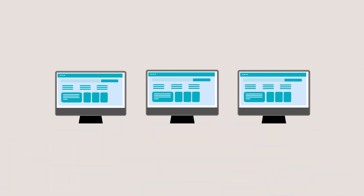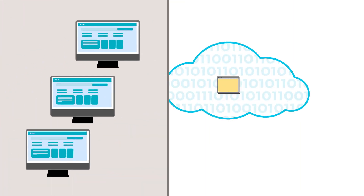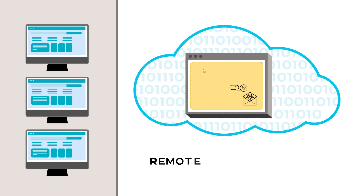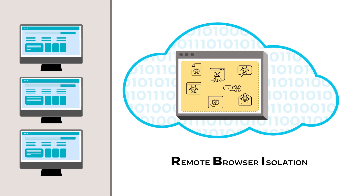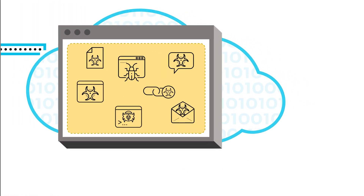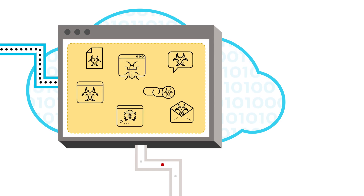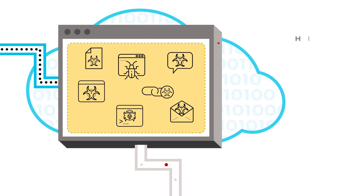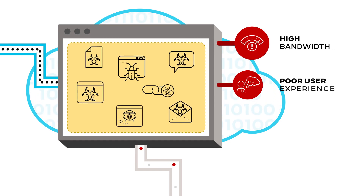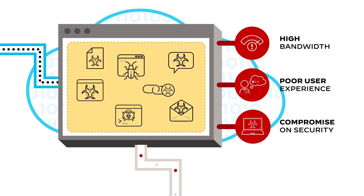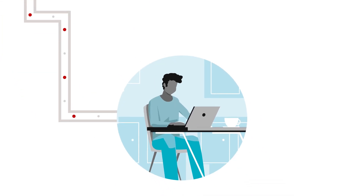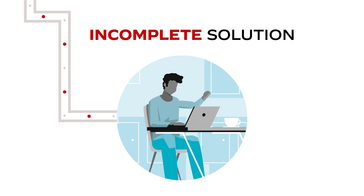To make web browsing safer, many enterprises employ remote browser isolation, or RBI. The problem is, isolation products today either adopt technologies that are high bandwidth and incur a poor user experience, or they compromise on security by not offering a true no-code execution channel, making for an incomplete solution.